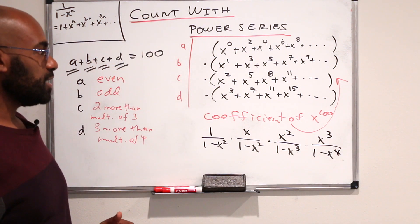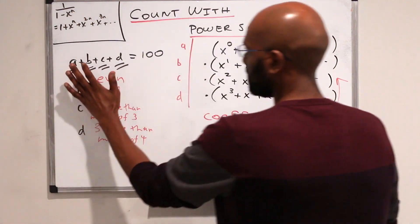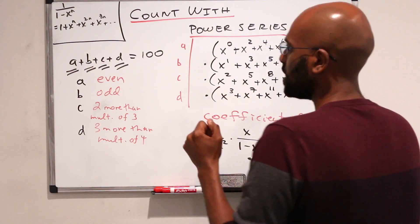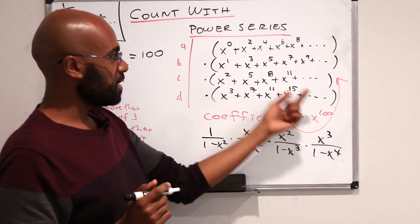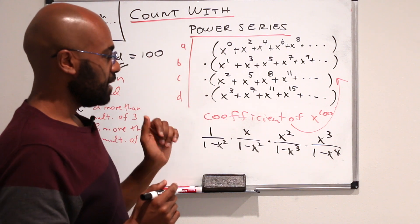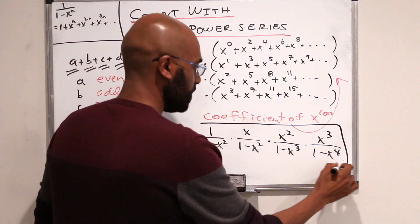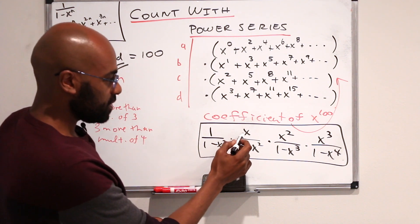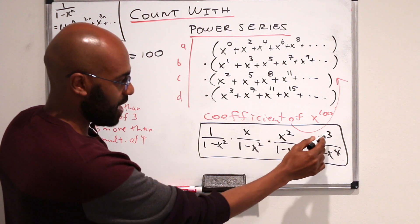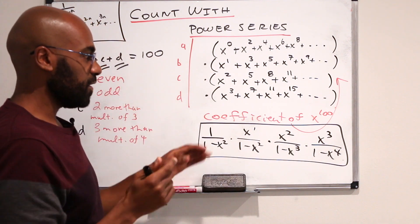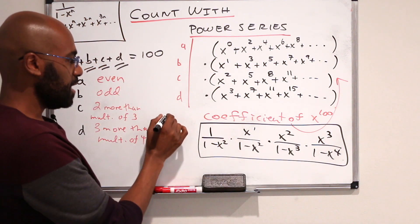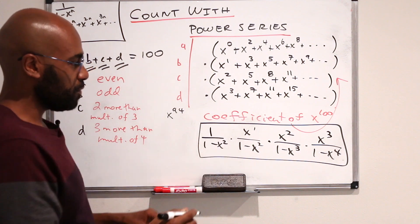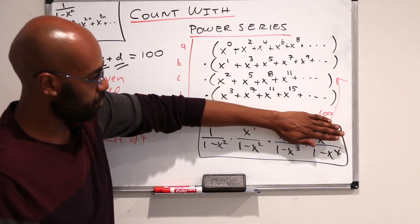Since the number of solutions to this equation under these conditions is the coefficient of x to the 100 in this expansion, we notice there's an x to the 6th power in the numerator, so we can also think of this as the coefficient of x to the 94th in the product where we have ones on the numerator instead. We don't have to think about it that way but that's an option.